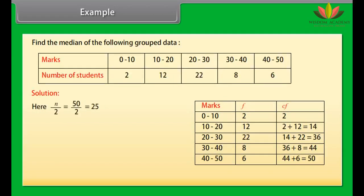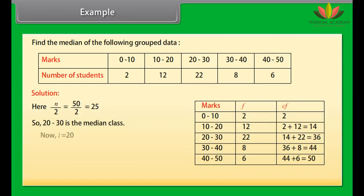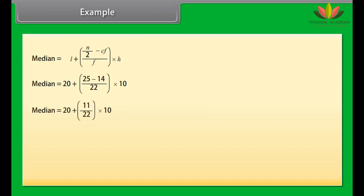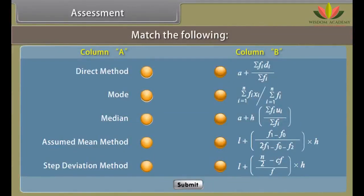Find the median of the following grouped data. Solution: In the first column the marks are written, in the second column the frequencies, and in the third column the cumulative frequencies. n/2 equals 50/2 equals 25, so 20 to 30 is the median class. L equals 20, h equals 10, cf equals 14, f equals 22. Median equals 20 plus [(25 minus 14) divided by 22] multiplied by 10, equals 20 plus (11/22)×10, equals 20 plus 5, equals 25. This means 50% of students got less than 25 marks and the other 50% got more than 25 marks.